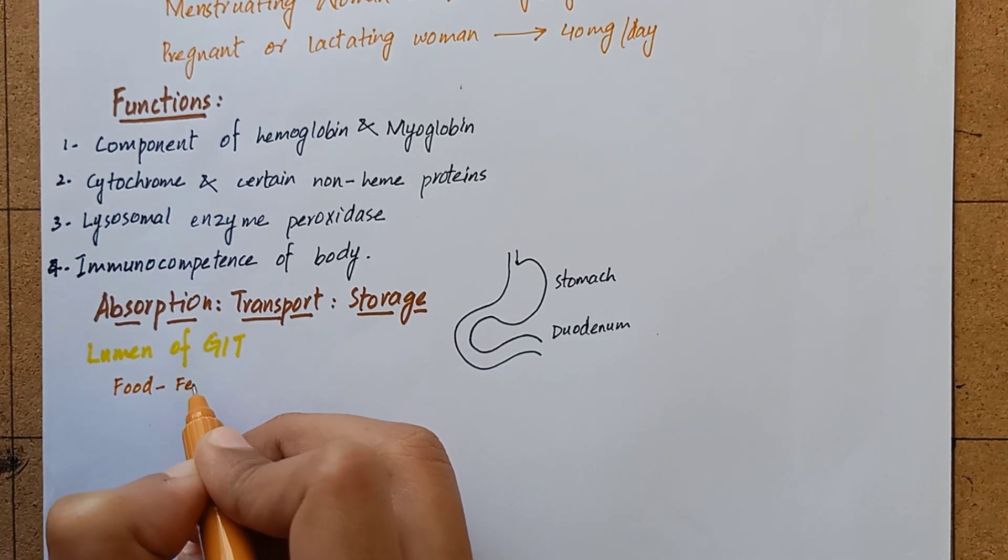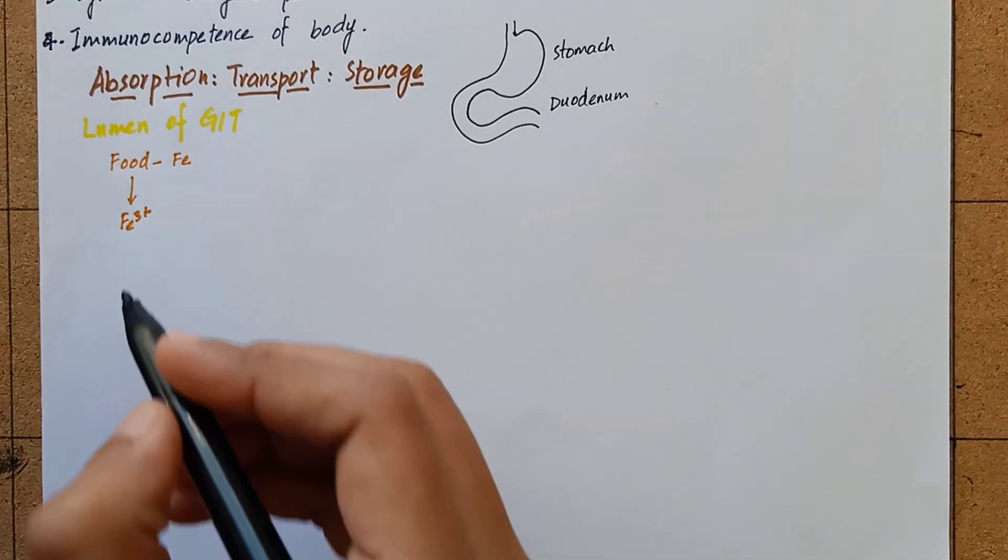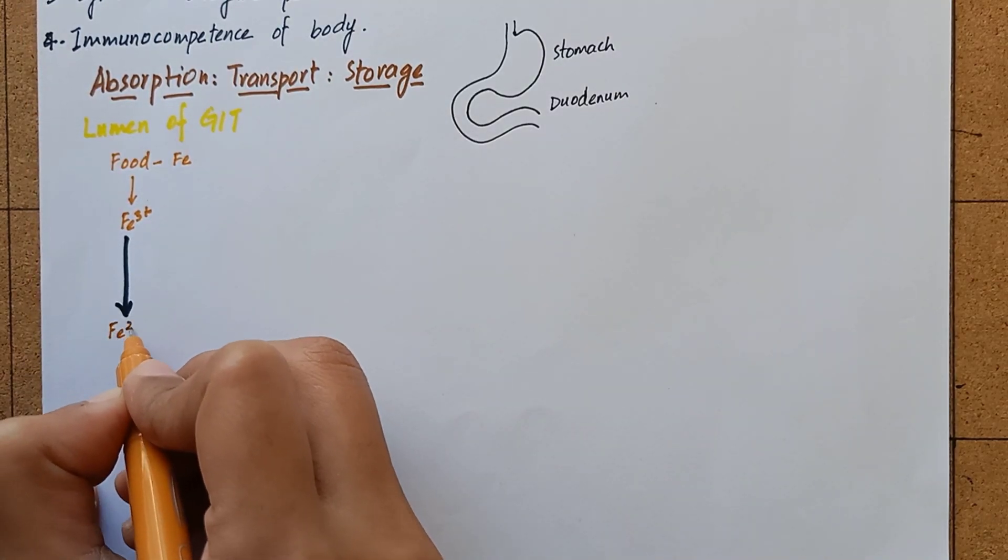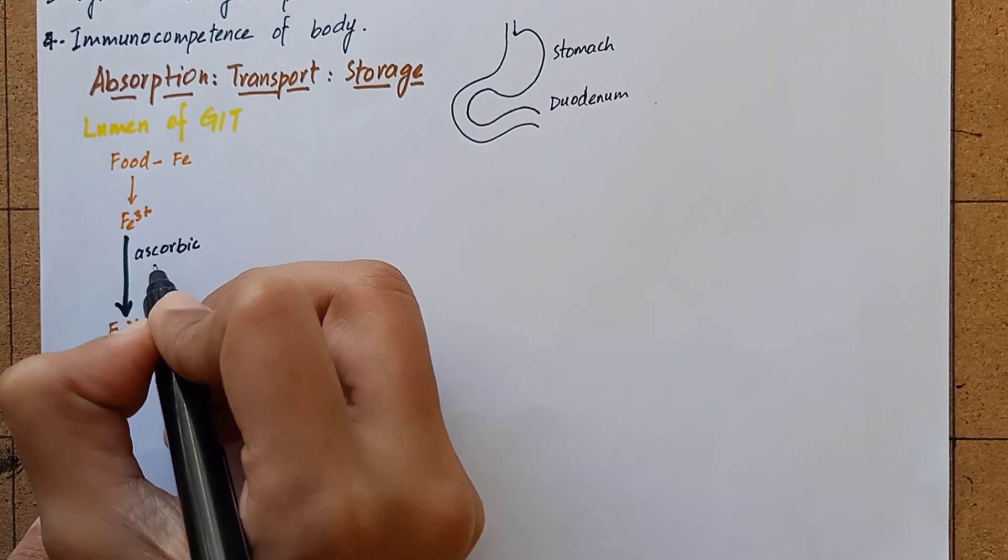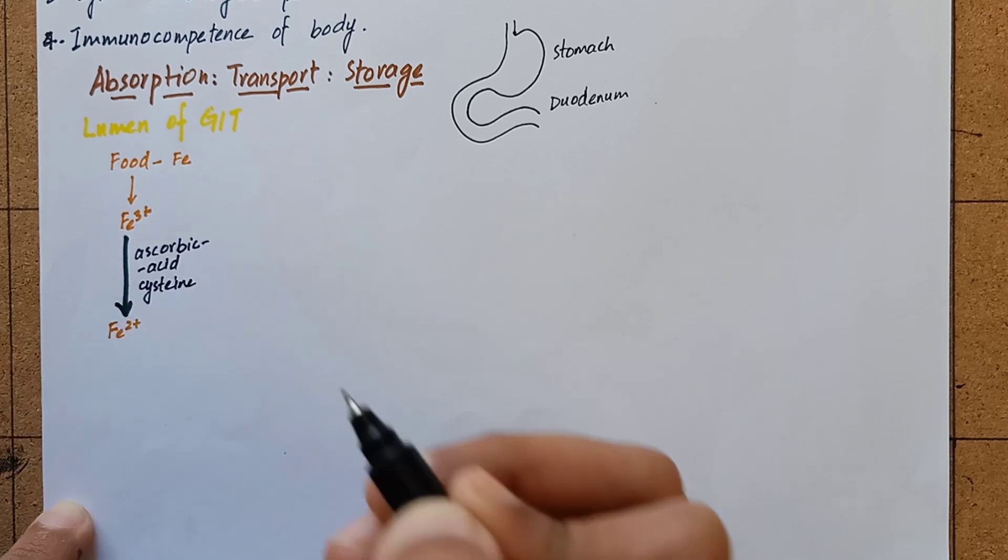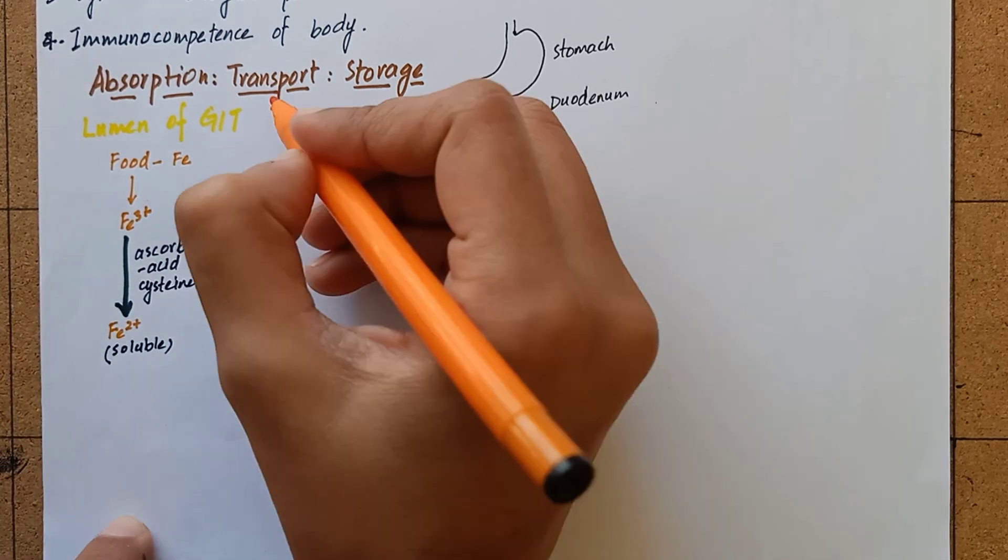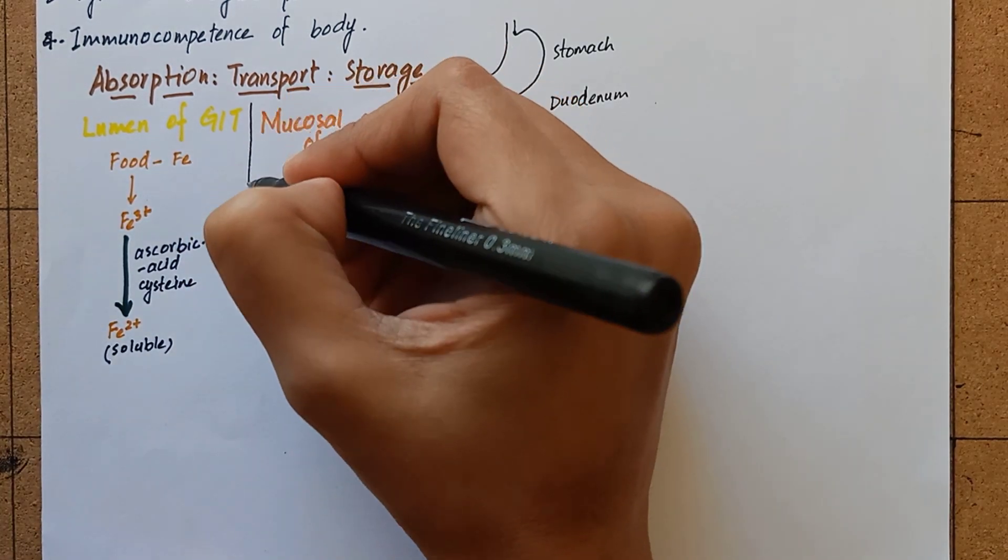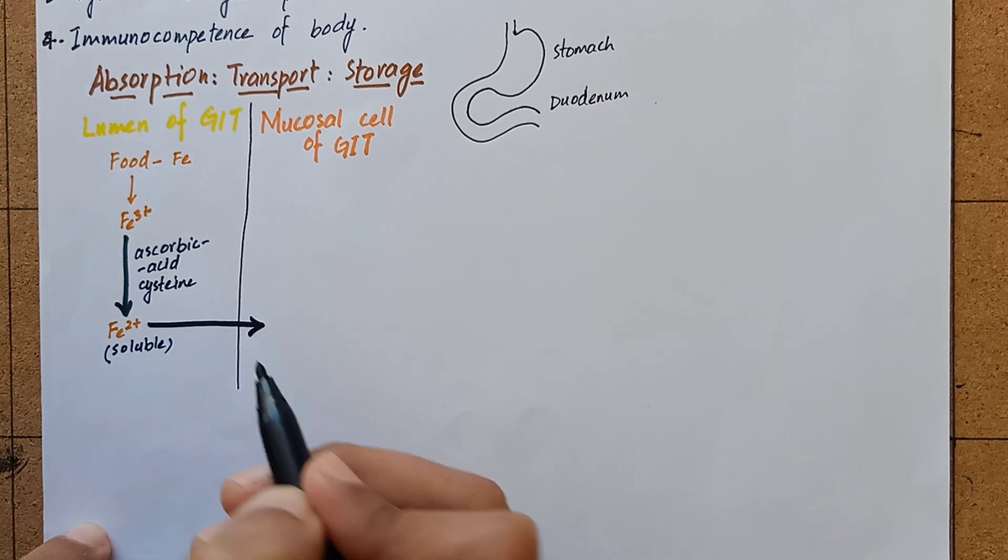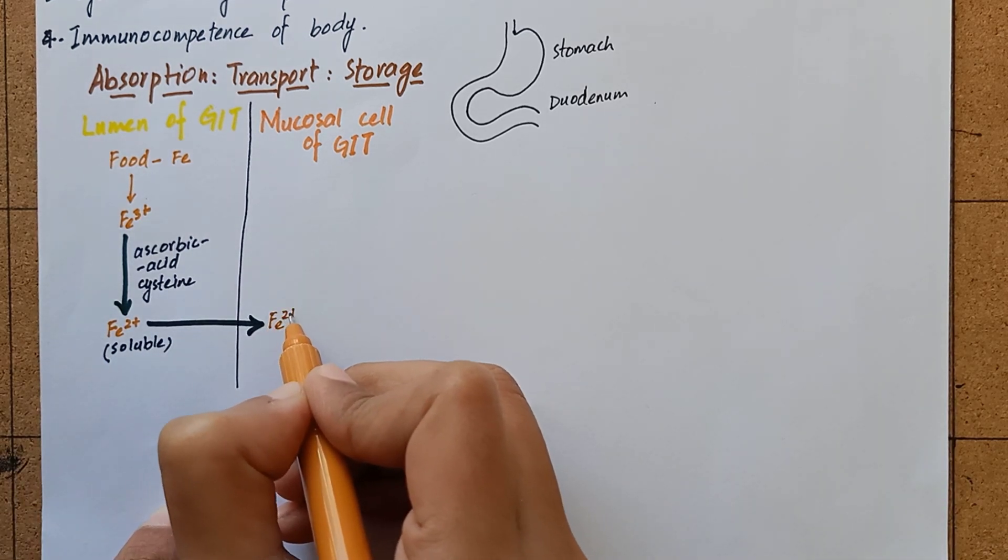Our foods mostly contain iron in ferric form. Stomach contains reducing substances like ascorbic acid and cysteine which convert ferric iron to ferrous form. Iron in ferrous form is soluble and readily absorbed by intestinal mucosal cells.